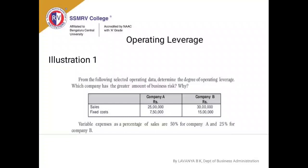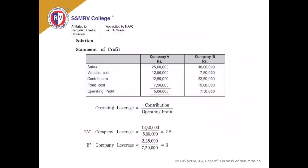Illustration 1: The following data is given where you have sales, fixed cost, and two companies — Company A and Company B. Variable expenses are given as a percentage of sales: 50% for Company A and 25% for Company B. This question asks you to find out the operating leverage and to determine which company has a greater amount of risk and why.